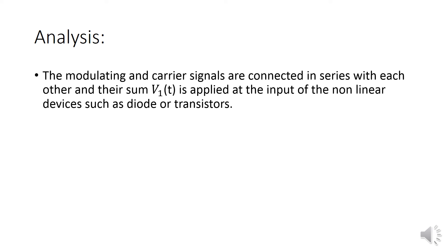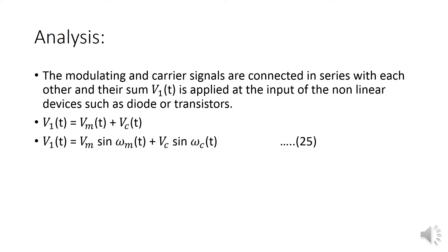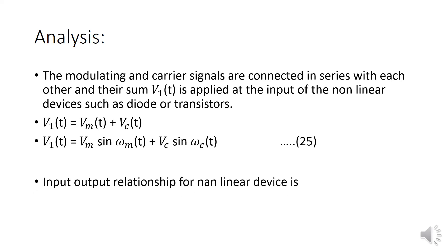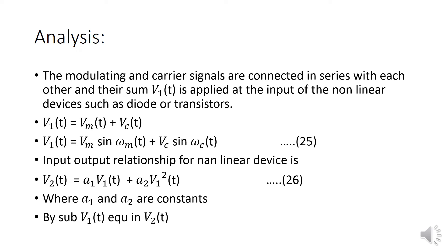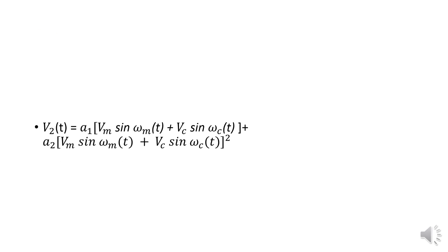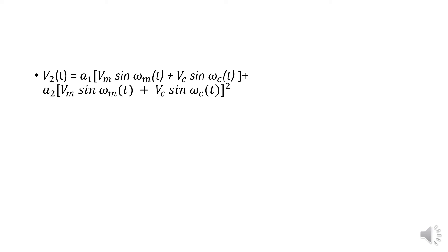We analyze the modulating signal and the carrier signal connected in series. Their sum V1(t) is applied at the input of the non-linear device such as a diode or transistor. V1(t) = Vm(t) + Vc(t), that is V1(t) = Vm·sin(ωm·t) + Vc·sin(ωc·t). The input-output relationship for the non-linear device is: V2(t) = A1·V1(t) + A2·V1²(t), where A1 and A2 are constants. Next, we substitute V1(t) into the equation for V2(t).